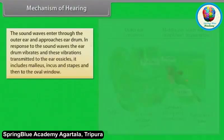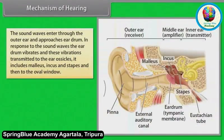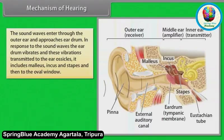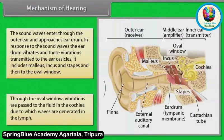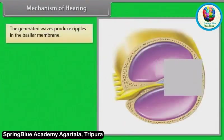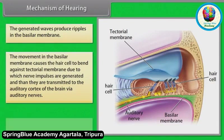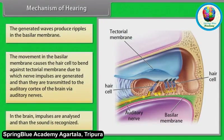Sound waves enter through the outer ear and approach the eardrum. In response, the eardrum vibrates and these vibrations are transmitted to the ear ossicles — malleus, incus, and stapes — and then to the oval window. Through the oval window, vibrations pass to the fluid in the cochlea, generating waves that produce ripples in the basilar membrane. The movement in the basilar membrane causes the hair cells to bend against the tectorial membrane, generating nerve impulses that are transmitted to the auditory cortex of the brain via auditory nerves, where impulses are analyzed and sound is recognized.